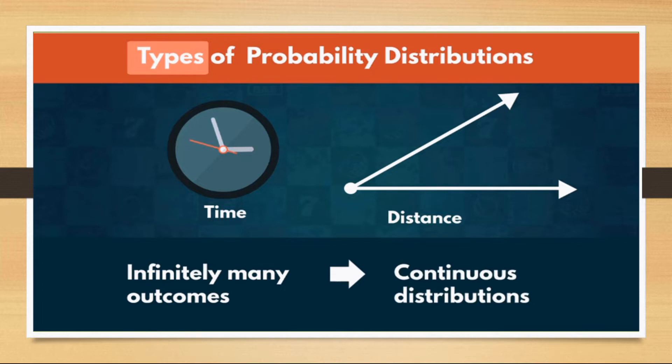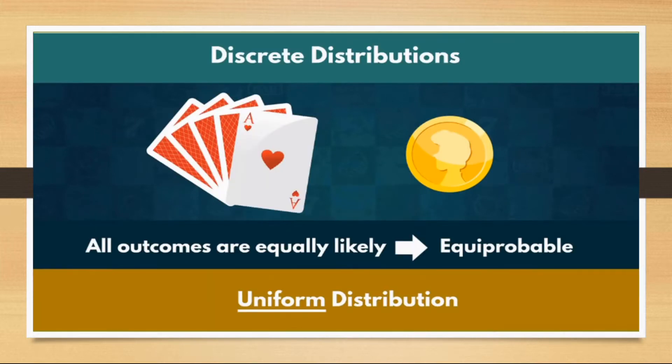Let's look at some of the discrete distributions. The first one is uniform distribution. Here all outcomes are equally probable. For example, the probability of getting heads on a coin is the same as the probability of getting tails. Same way, the probability of drawing a king from a pack of cards is the same as the probability of drawing a queen.